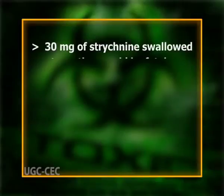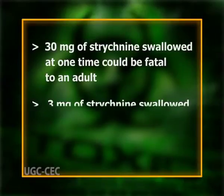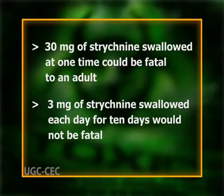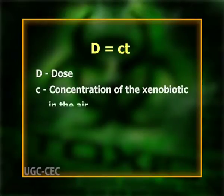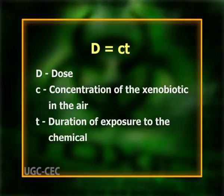This is because the body can overcome or repair the effect of each sub-toxic dose if enough time lapses between doses. In such a case, the total dose — harmful if received all at once — is non-toxic when administered over a period of time. For example, 30 mg of strychnine swallowed at one time could be fatal to an adult, whereas 3 mg swallowed each day for 10 days would not be fatal. An equally important aspect along with dose is time. According to Haber's Law: D = C × T, where D is dose, C is concentration of the xenobiotic in air, and T is the duration of exposure.